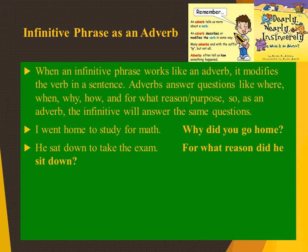Infinitive phrase as adverb — when an infinitive phrase works like an adverb, it modifies the verb in a sentence. Adverbs answer questions like where, why, how, or for what reason. The infinitive will answer the same questions. 'I went home to study for maths' — 'to study for maths' is the infinitive phrase acting as adverb. 'He sat down to take the exam.' He sat down for what reason? Because he wanted to take the exam — giving more information about why he sat down.